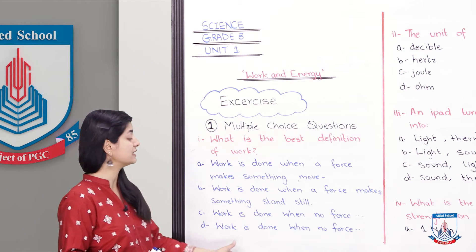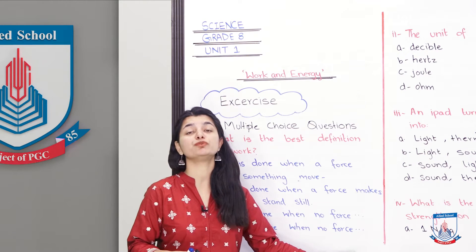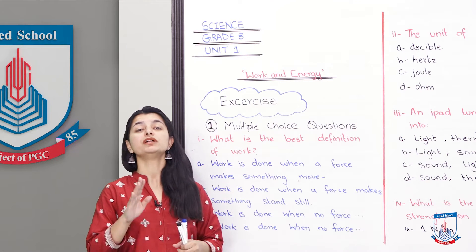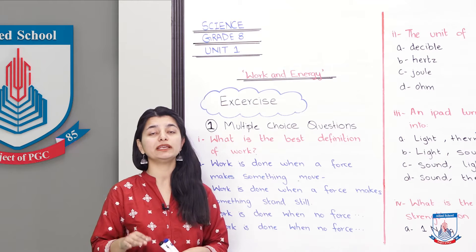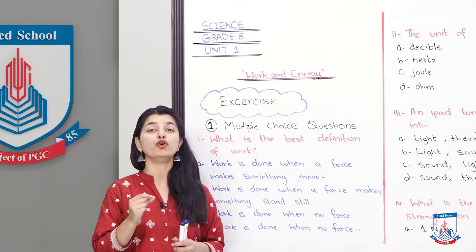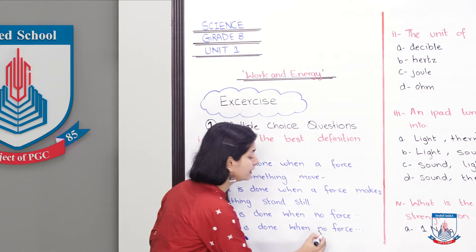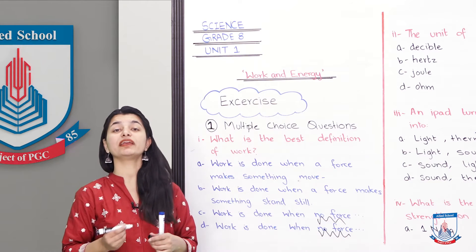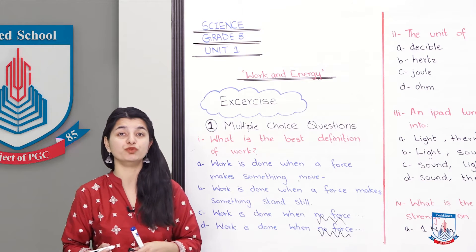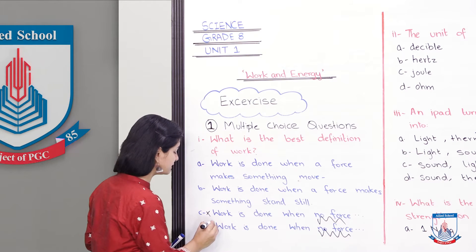Work is done when no force is used to make something stand still. And fourth is, work is done when no force is used to make an object move. So the last two options, I think you'll be smart enough to know that we'll disregard them immediately. No force is coming, that makes no sense, because you need force for work. In the formula, you multiply force by the distance moved. So option C and D cancelled.